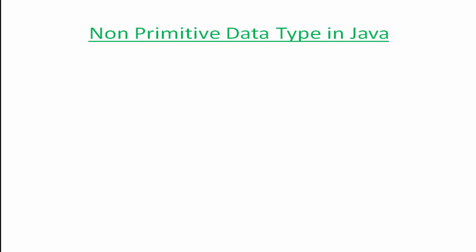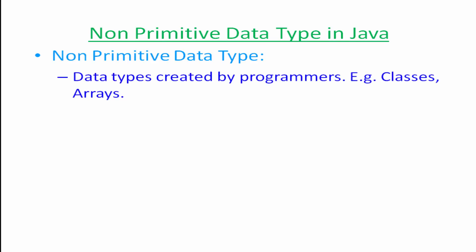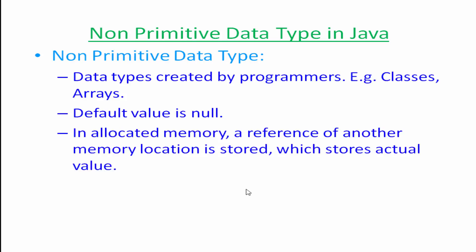Now let's look at non-primitive data types in Java. These data types are created by programmers, like classes and arrays — we will learn about these in future lectures. The default value is null for all non-primitive data types. In non-primitive data types, a reference of another memory location is stored rather than the value directly, and at that other memory location the actual value is being stored.